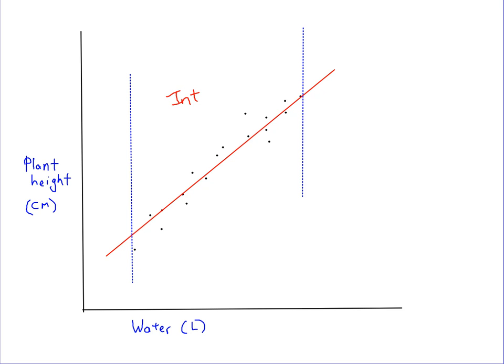We've also found out that the equation of our line is y equals 2x plus 3. So x values are across the bottom here, y values up the side. We've put 20 litres of water on our plants down here, 20 litres.